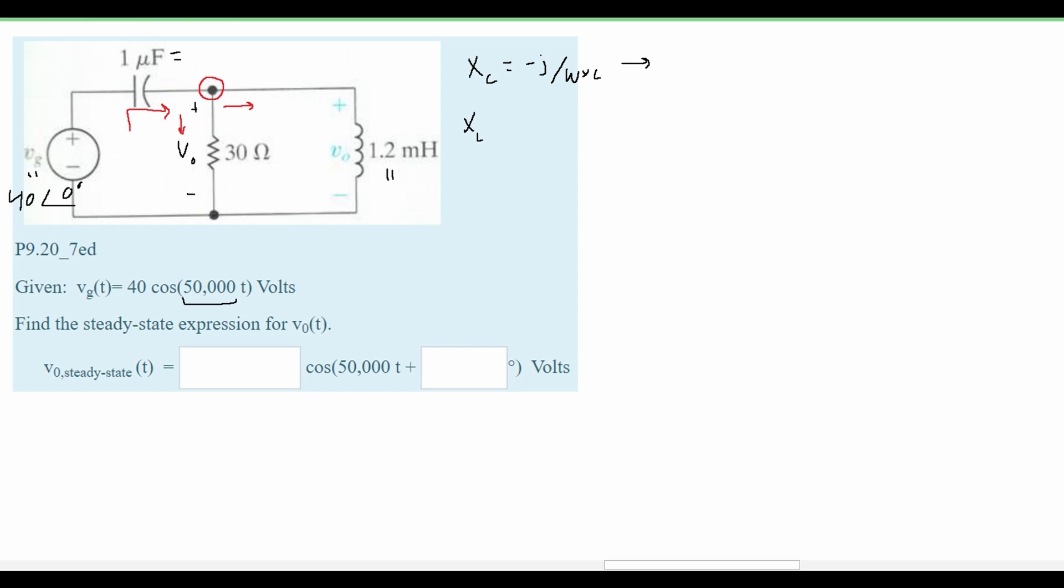When we plug in these values we will have a negative j over our omega which is 50,000 or 5 times 10 to the 4th, and we know our capacitance to be one microfarad, and so we can multiply this by 10 to the negative 6 for a micro.